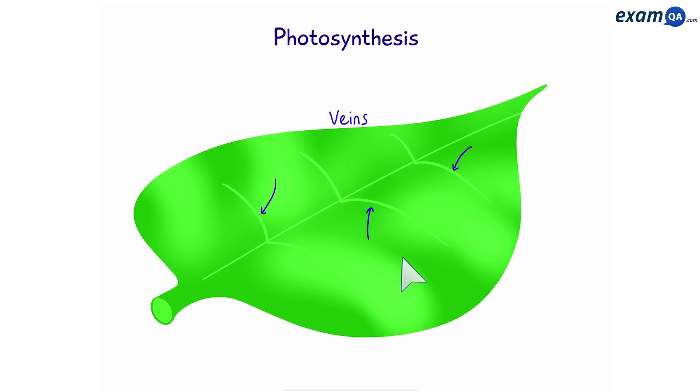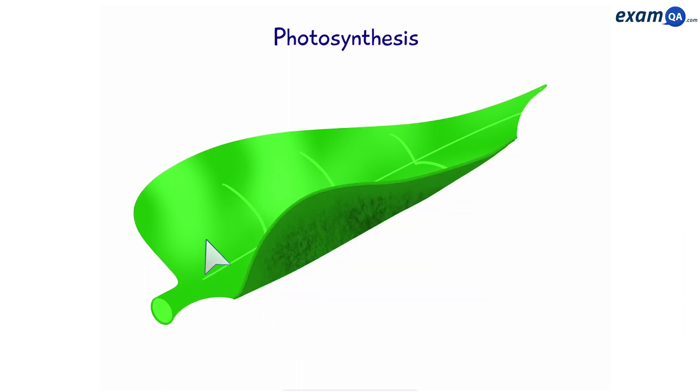These lines are supposed to represent veins. Veins are vessels that allow water to come into the plant, and also take glucose away to other parts of the plant, such as the roots. While the top of the leaf is smooth and waxy, underneath is rough, because of stomata.